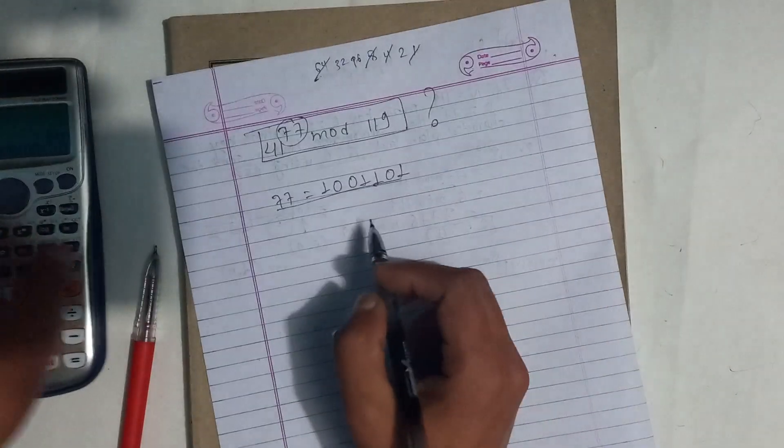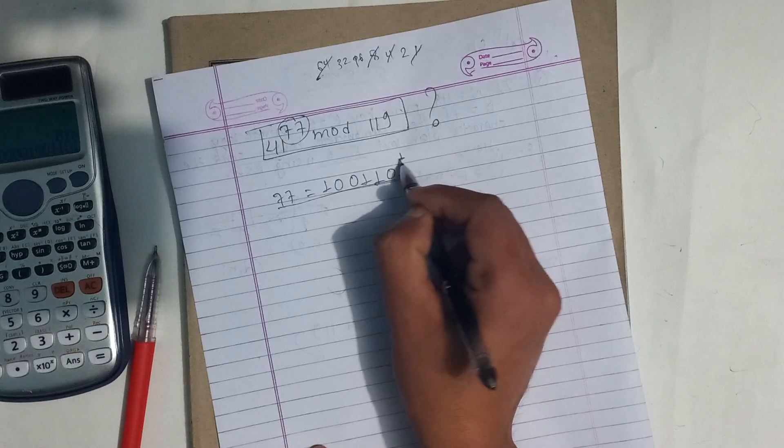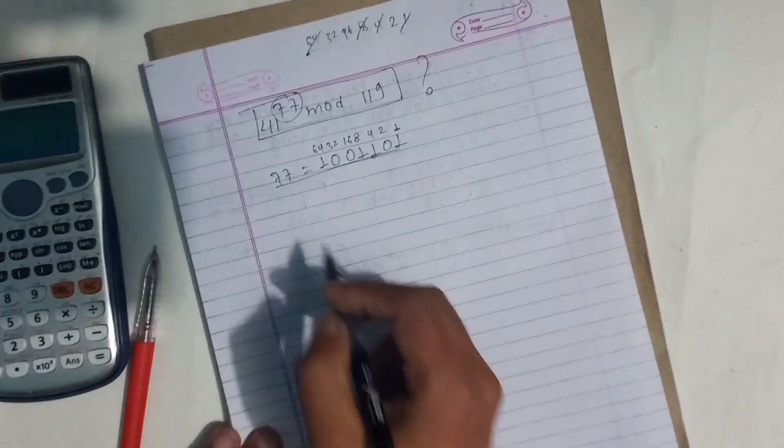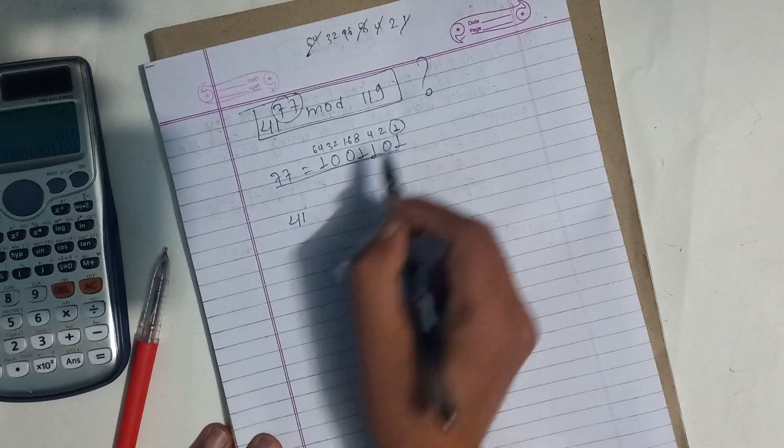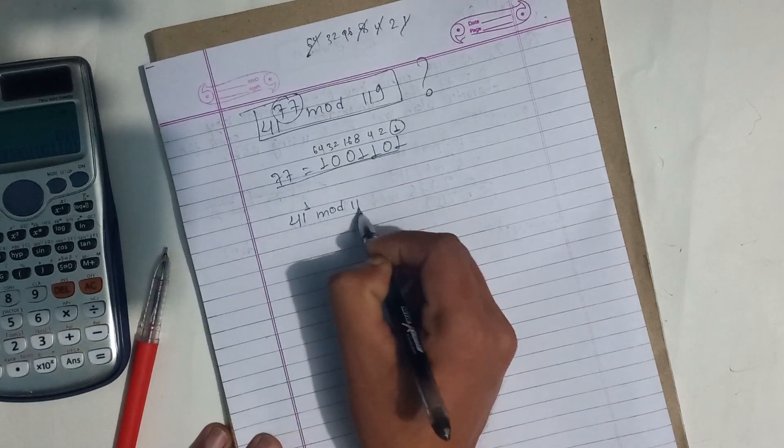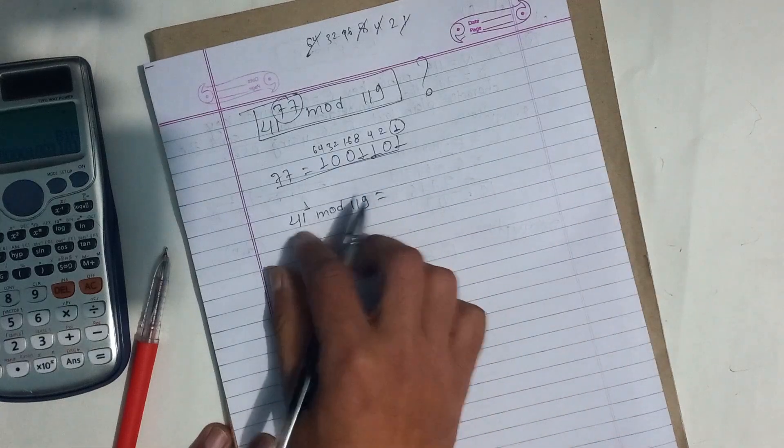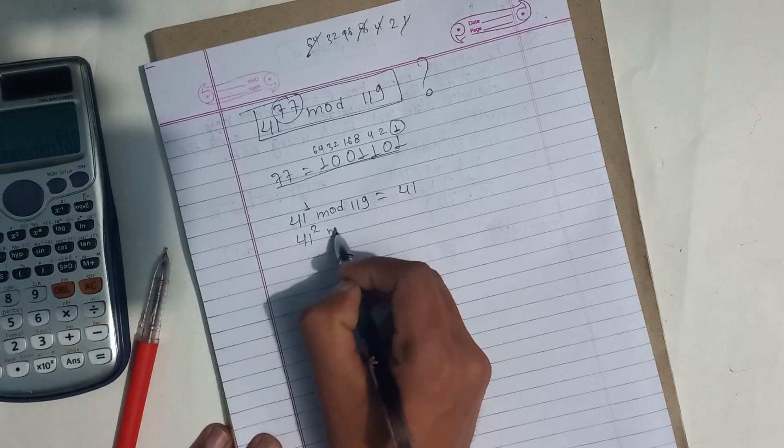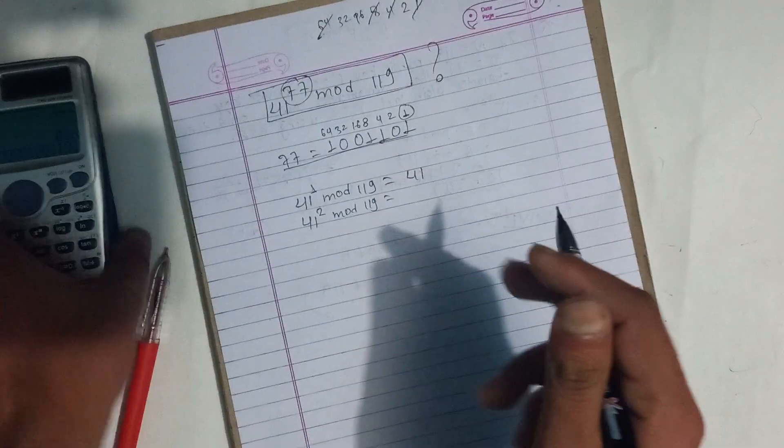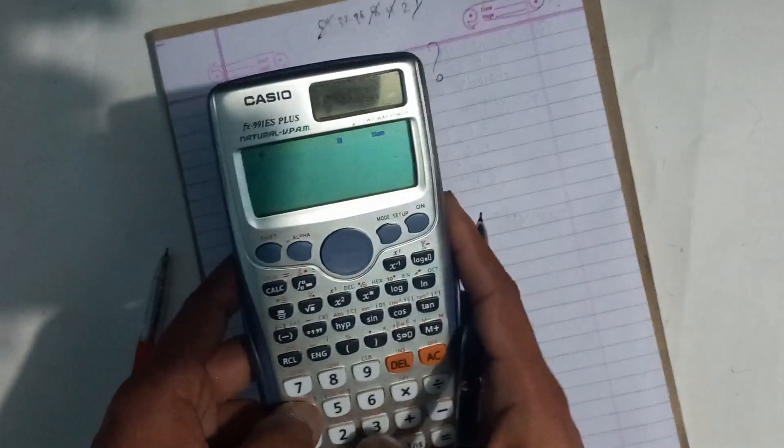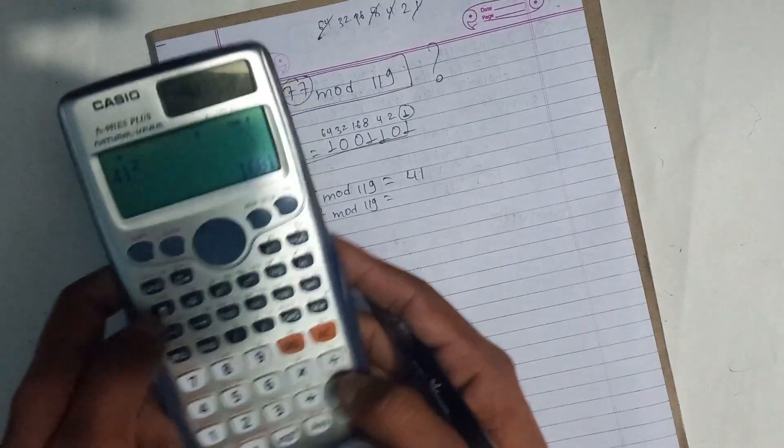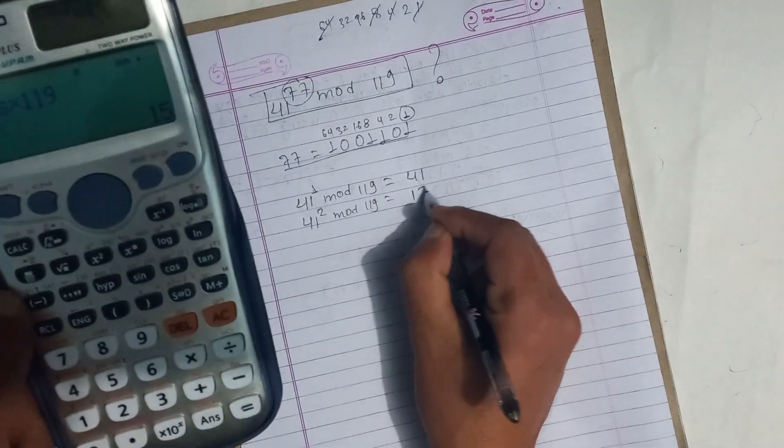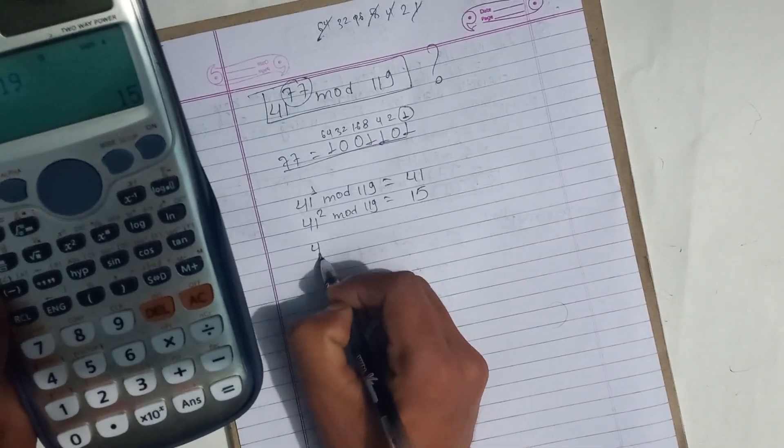Perfect, very good. Now we can see the square sequence: square 1, square 2, square 4, square 8, and so on. Now we can see 41 power 1 mod 119, so we can see 41 power 2, so we can calculate 41 power 2 mod 119. This is 41 power 2.